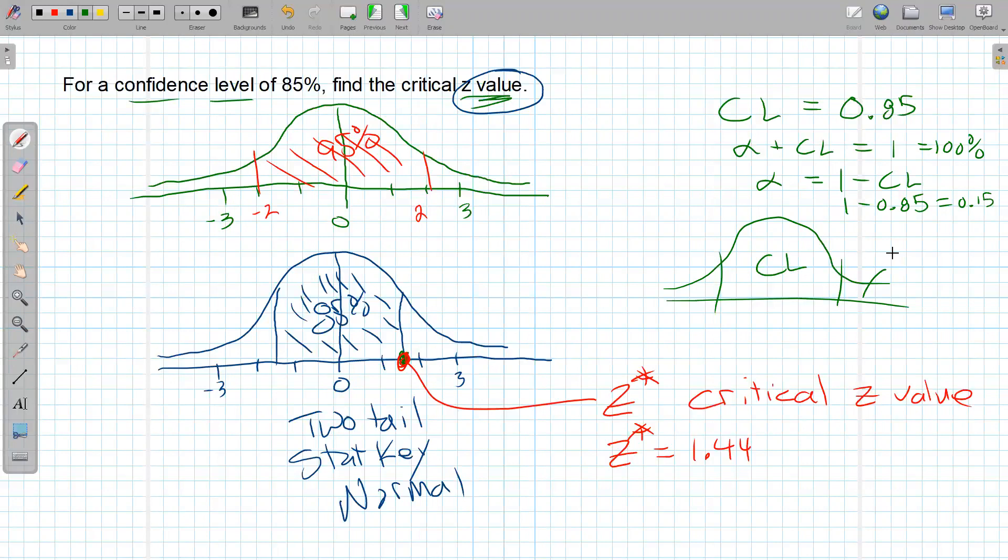And the tails have to split that. So this is alpha over 2, which would be that 0.075, 7.5 percent. This one is the same thing, alpha over 2. The reason I'm mentioning this is a couple things. We're going to see this kind of relationship notation between alpha, the confidence level, and alpha over 2. And the spreadsheet needs this right here to be able to calculate this critical z for it. So I need that for a spreadsheet.